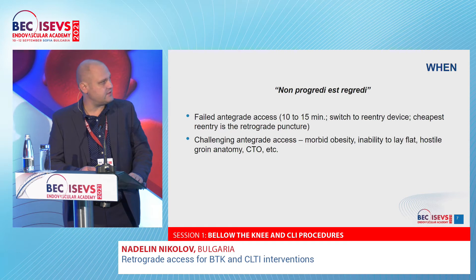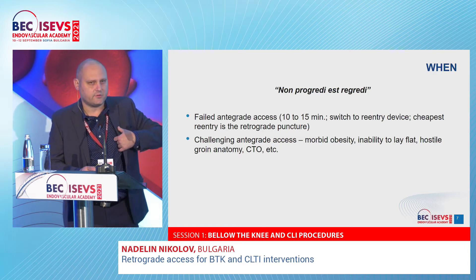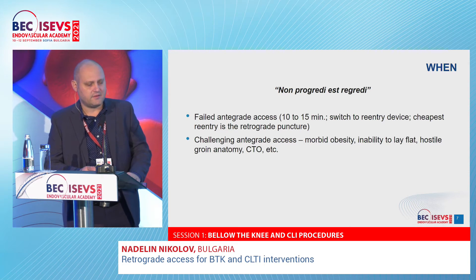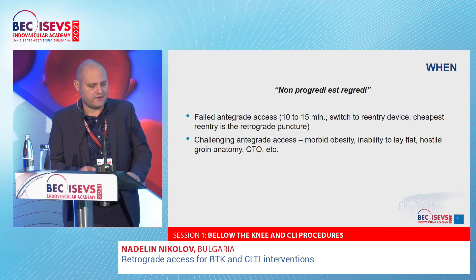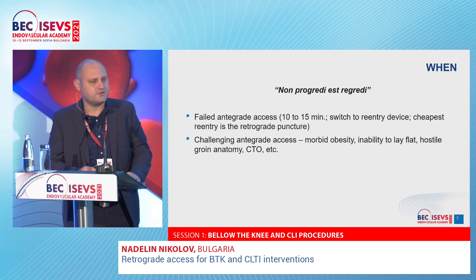When to do a retrograde access? Simply put: if you cannot proceed antegradely, you go retrograde. In the past I struggled a lot going antegrade, but since adopting the retrograde technique, I give myself 10 to 15 minutes and then switch to retrograde or a re-entry device. However, re-entry devices are expensive — the cheapest re-entry device is the retrograde puncture. Retrograde access is also used in challenging anatomy: morbid obesity, inability to lay flat, hostile groin anatomy, and long CTOs.